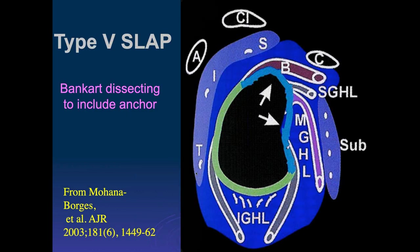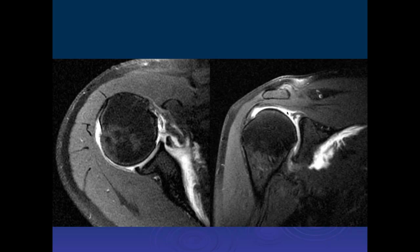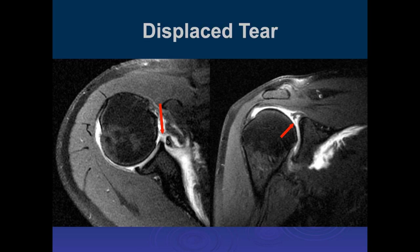Type 5 is typically a Type 1-like superior tear that extends anteriorly to involve the anterior labrum. Here we see a superior tear with the biceps anchor mostly intact but with a markedly irregular torn superior labrum that extends all the way down along the anterior labrum — a displaced Type 5 tear. I used to give the types in my reports but now I just describe the findings.